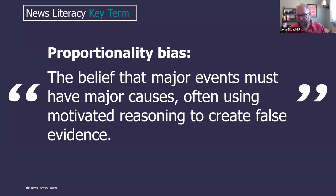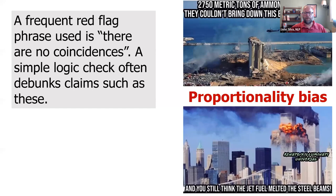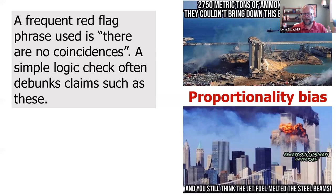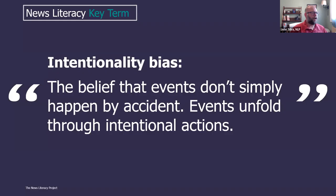Misinformation manipulates us emotionally, but it also manipulates us through cognitive biases. One of them is proportionality bias — the idea that if something big happens, there has to be some big cause behind it. This is actually at the heart of a lot of 9/11 conspiracy theories. If you are engaging in proportionality bias, a comparison might make perfect sense, but it's trying to manipulate you into false belief by tapping into that particular bias. If we can recognize that and take a step back, we might be able to recognize pretty quickly that it just doesn't make logical sense.